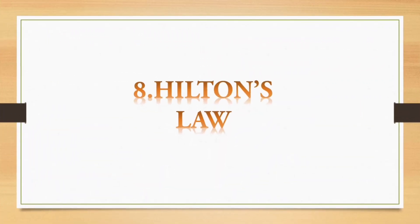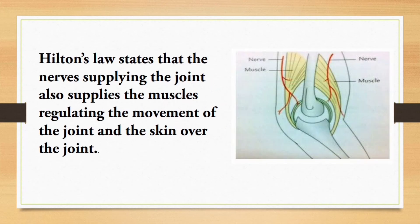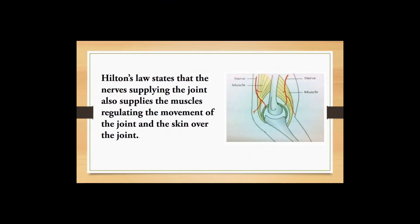Eighth question: Hilton's law. Hilton's law states that the nerve supplying the joint also supplies the muscles regulating the movement of the joint and the skin over the joint. After writing the definition, draw this diagram where you can see a joint and the nerve supplying both the joint and the muscles over the joint.